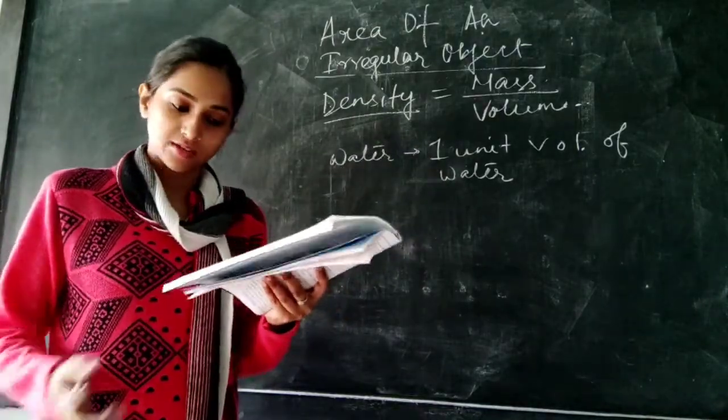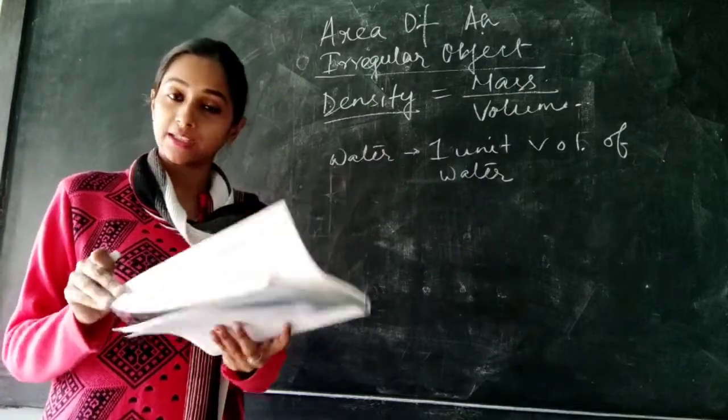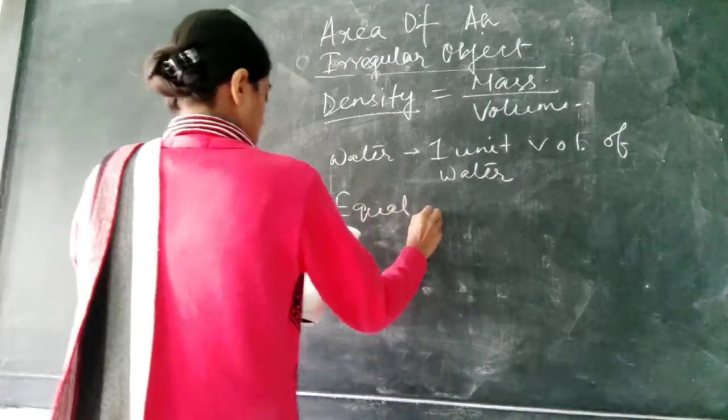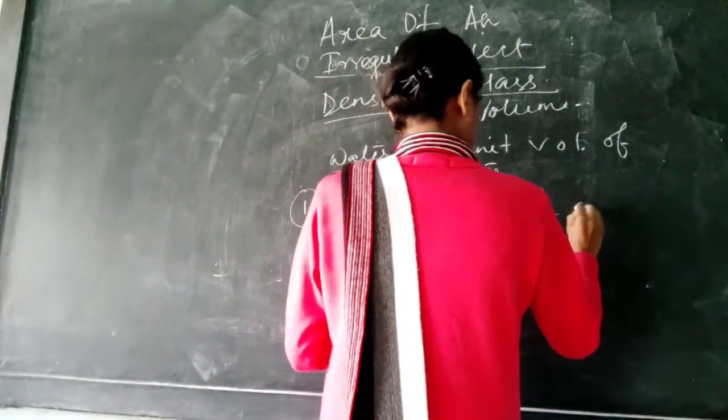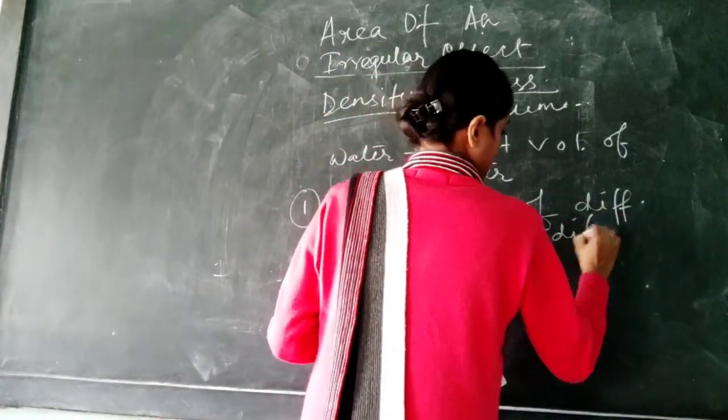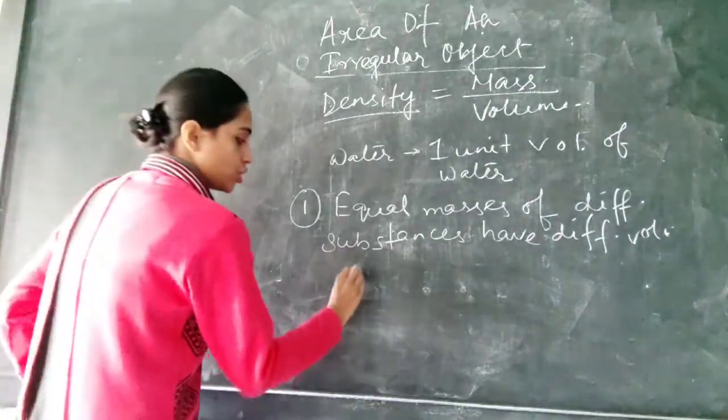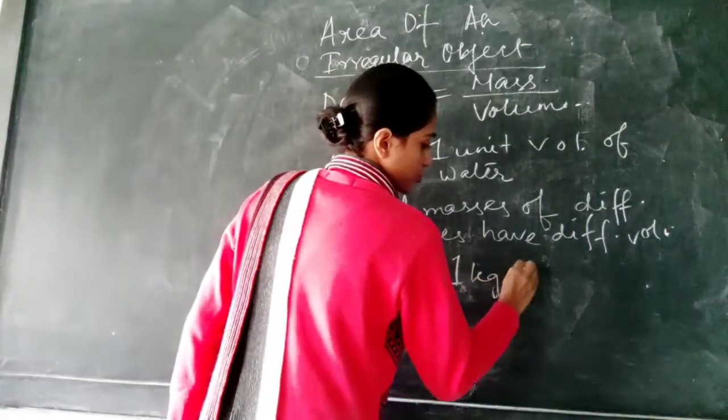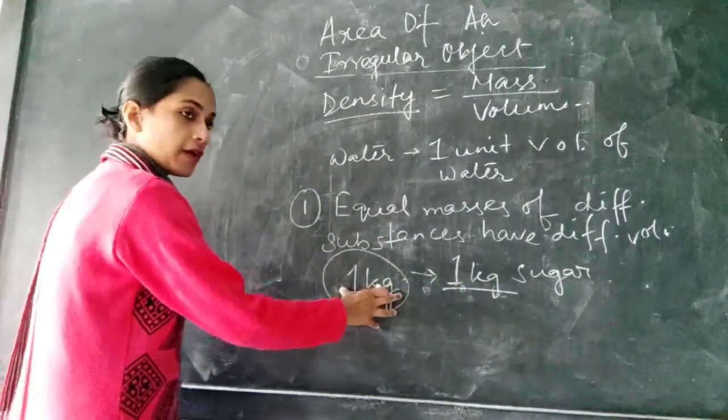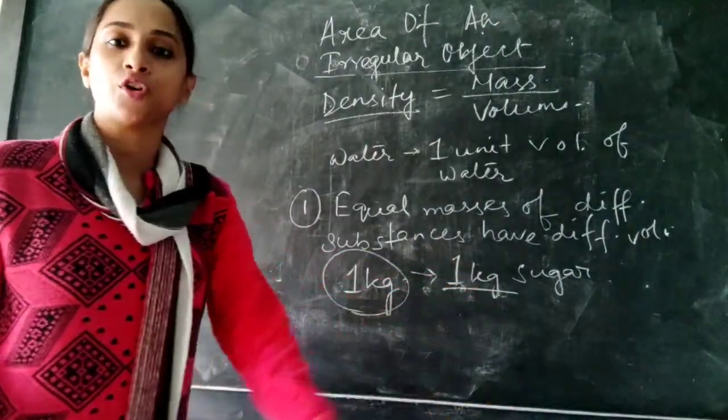Now each body has a certain mass and a definite volume. We know that equal masses of different substances have different volumes, equal volumes of different substances have different masses, experimentally is being observed. So at first we will see that equal masses of different substances have different volumes. That means mass is equal but volume is different. How can we show this? 1 kg of iron compared with 1 kg of sugar. Both of their mass is same but 1 kg of iron will occupy less space than 1 kg of sugar. 1 kg of sugar will occupy more space. So more space means more volume. It is having lesser volume, it is having more volume compared to 1 kg of iron.